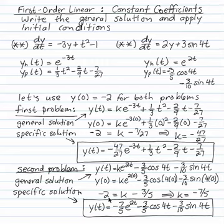And -2 is -10/5. So if I add 3/5 to both sides, k = -7/5. That gives me a solution of -(7/5)e^(2t) - (3/5)cos(4t) - (3/10)sin(4t).